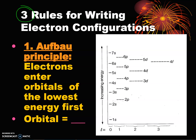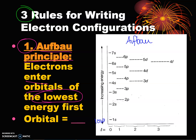The first rule is the Aufbau principle — I believe it's German for 'filling.' Electrons are going to enter orbitals with the lowest energy level first. This is an Aufbau diagram, and it shows the lowest energy level at the bottom and the highest energy up at the top.